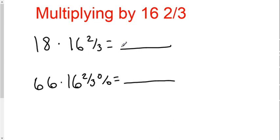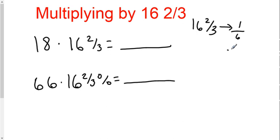I'll be teaching you how to multiply by 16 and two-thirds. The idea behind this trick is that 16 and two-thirds is very similar to 1/6. If you divide 1 by 6, you will end up with 0.166 repeating, which is very similar to 16 and two-thirds. So in your mind, any time you're multiplying by 16 and two-thirds, you want to divide the answer by 6. So 18 times 16 and two-thirds — you divide 18 by 6 and you get 3.